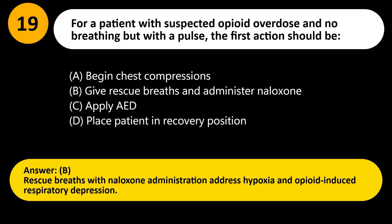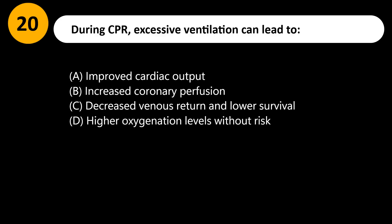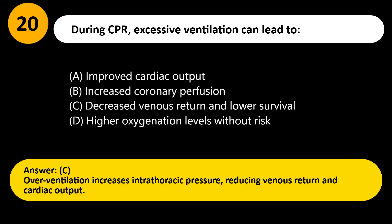During CPR, excessive ventilation can lead to: A) Improved cardiac output, B) Increased coronary perfusion, C) Decreased venous return and lower survival, D) Higher oxygenation levels without risk. Answer: C. Over-ventilation increases intrathoracic pressure, reducing venous return and cardiac output.